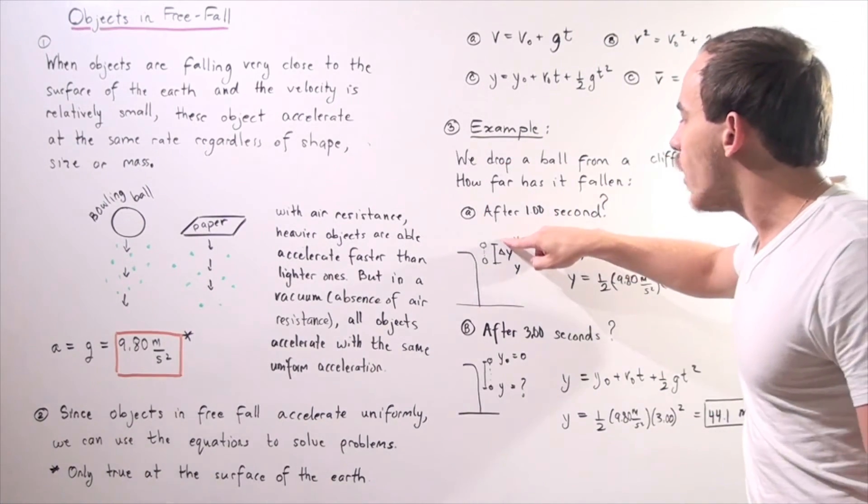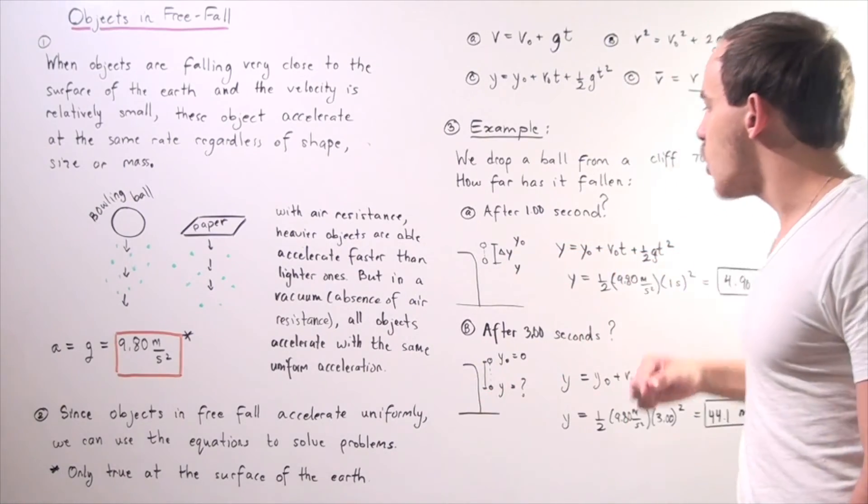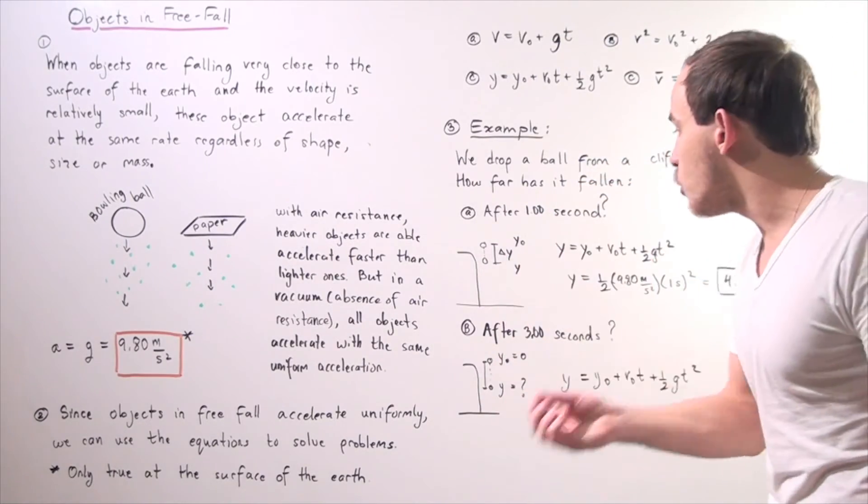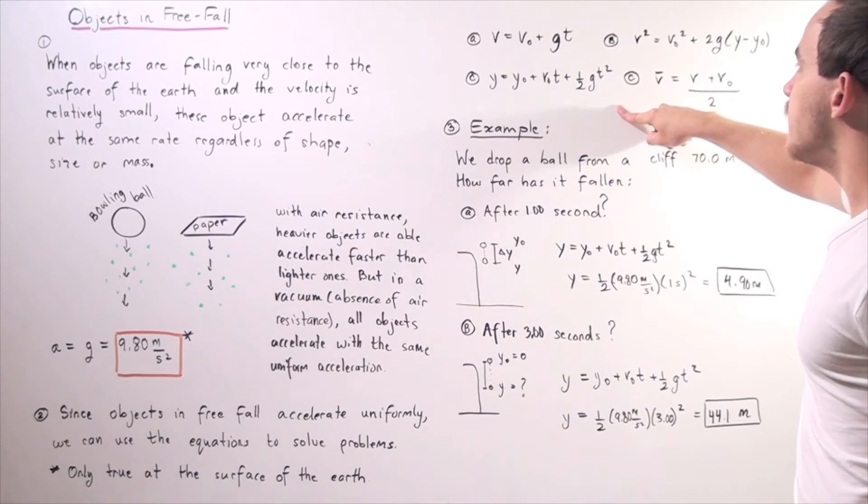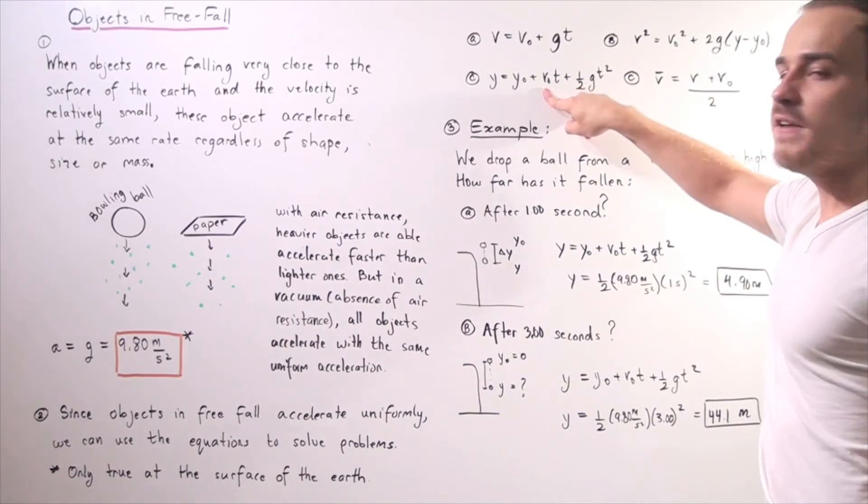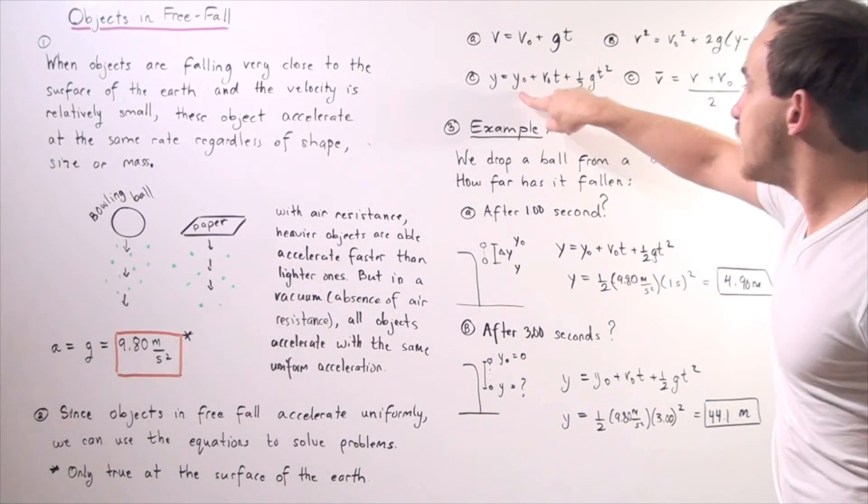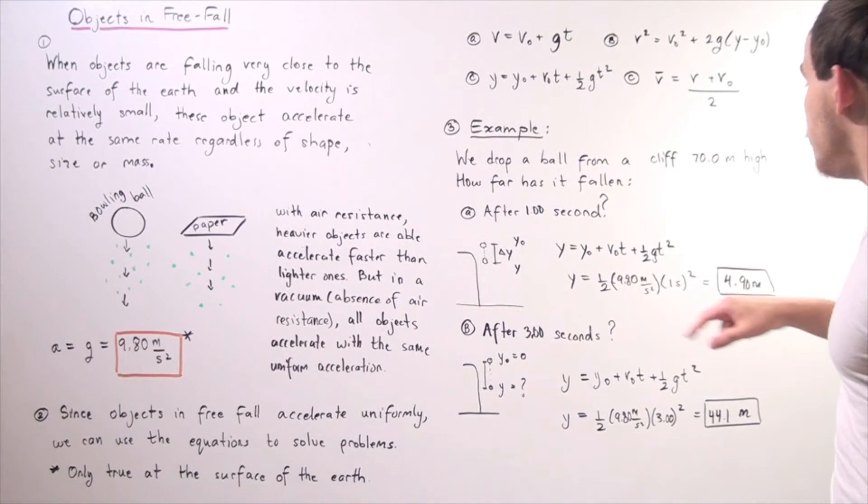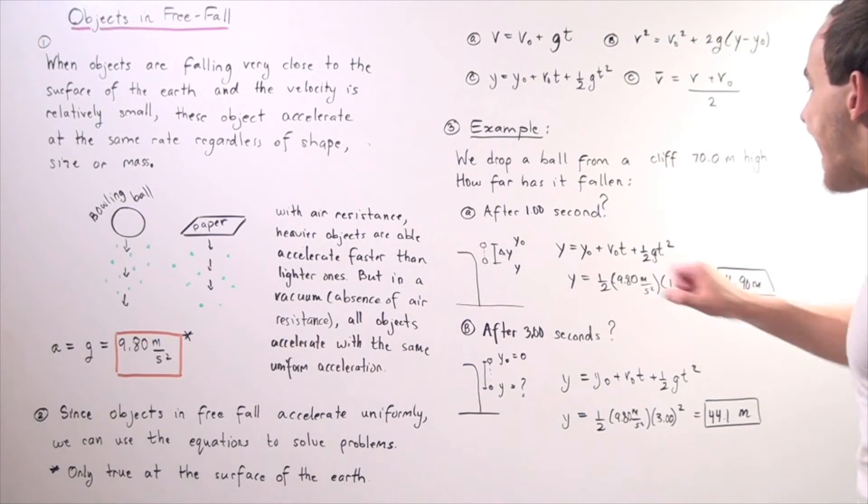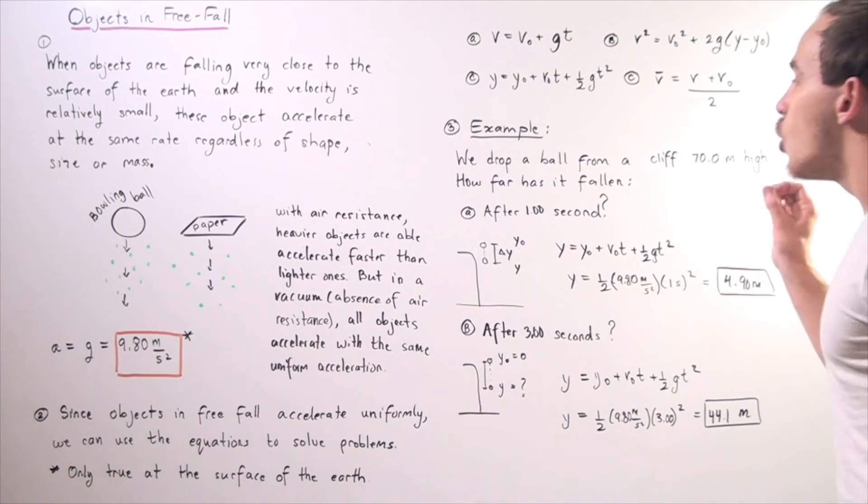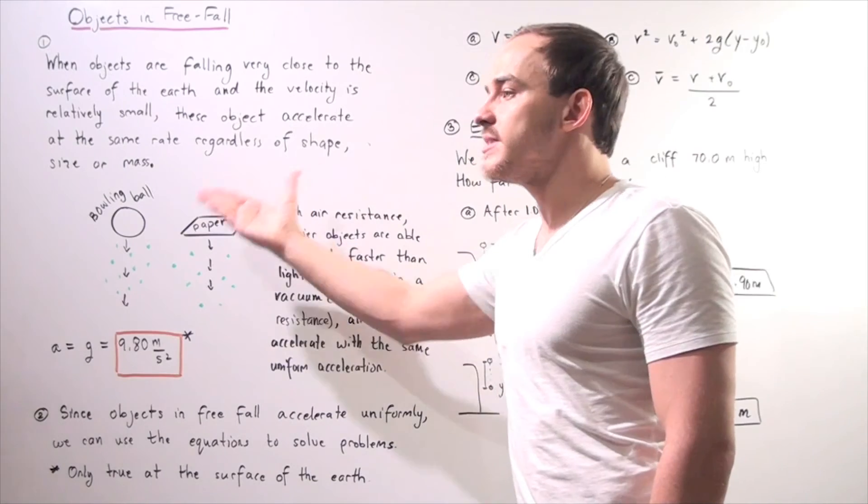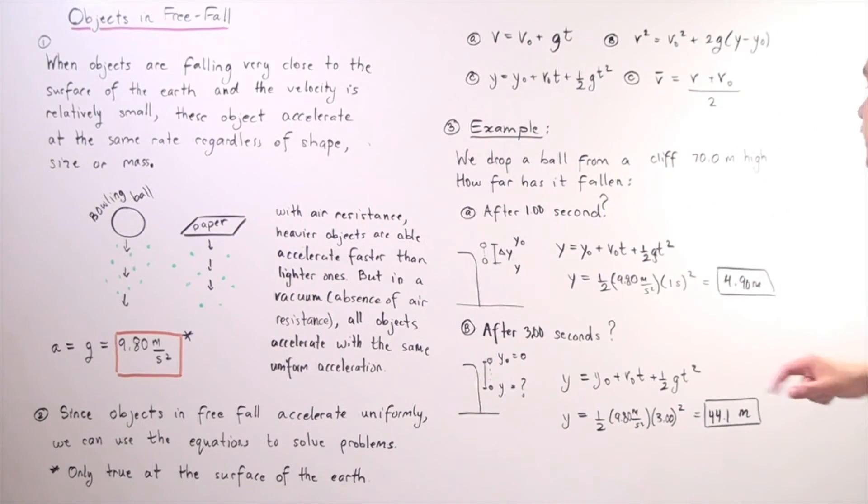After one second, what is the distance it has traveled? Our y-naught, y-initial, is zero meters. We want to find the final y. Let's use this equation here. We know what our v-initial is, our v-naught is zero. We know that this is zero, so we are simply left with y equals one-half times 9.80 meters per second squared because we're making the assumption there is no air resistance. We calculate this and we get 4.90 meters.